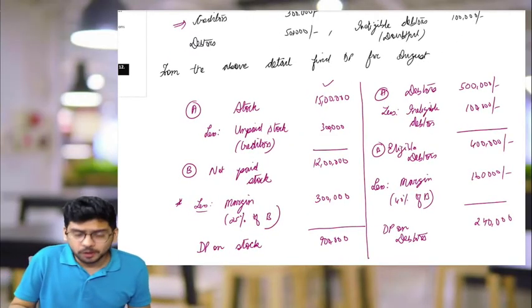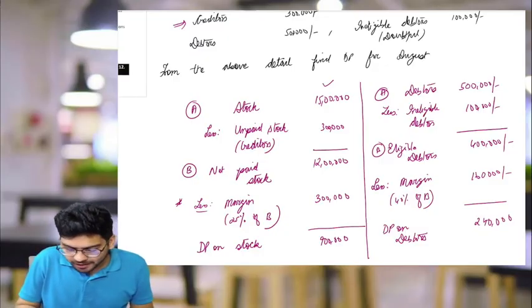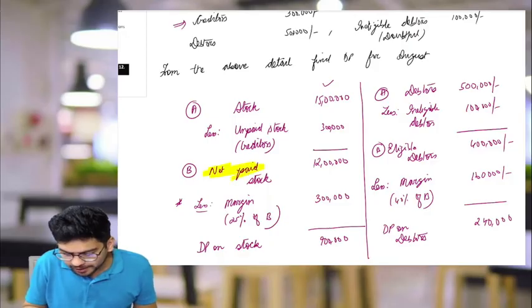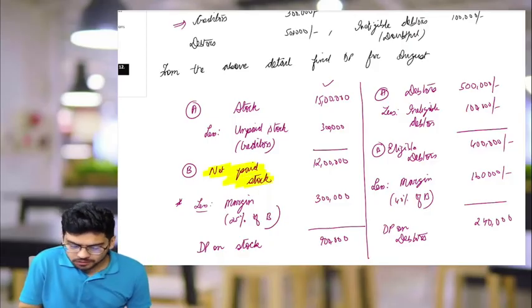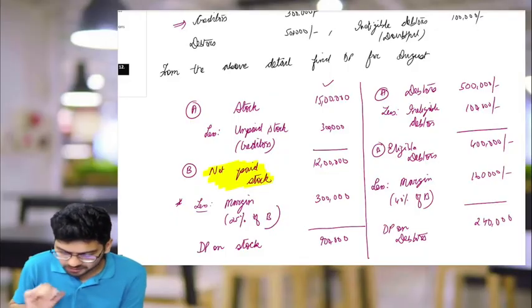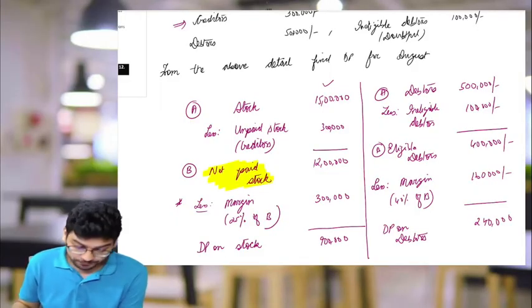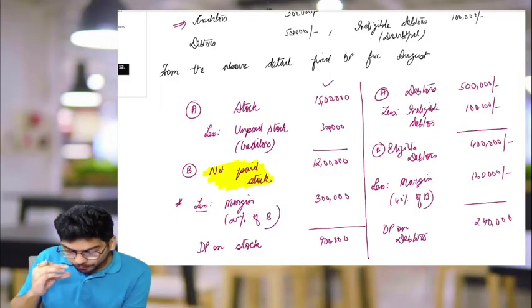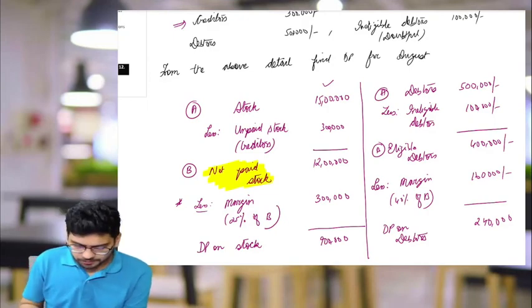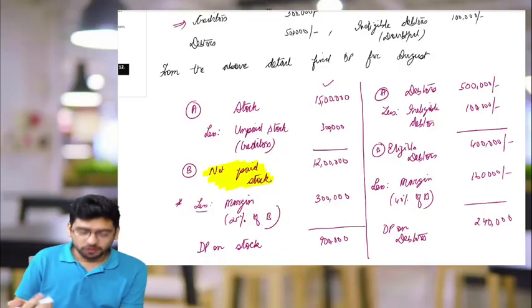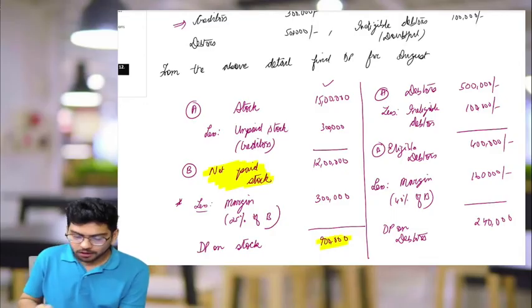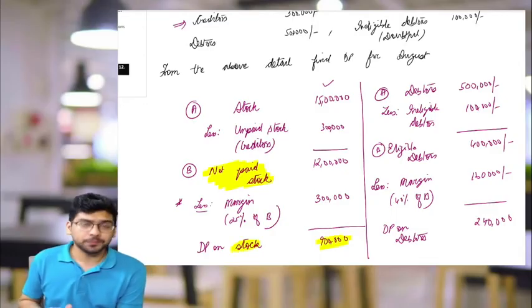unpaid stock creditors amount. The bank is going to reduce this and arrive at net paid stock - whatever stock ABC Limited has paid for. This figure comes to 12 lakhs. Now a margin will be deducted - 25% generally in case of stock. The margin is basically the owner's contribution, so 25% of stock will be deducted, which is 3 lakhs, and drawing power on stock will be 9 lakhs.